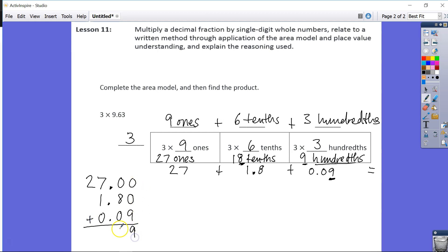Then we have our 9 hundredths. Add that up, we have 9 hundredths, 8 tenths, 8 ones, and 2 tens for our final product of 28 and 89 hundredths.